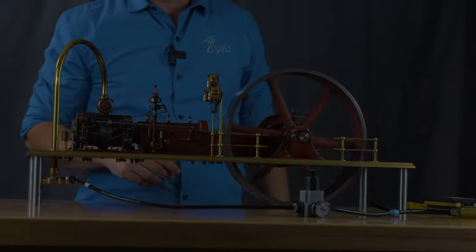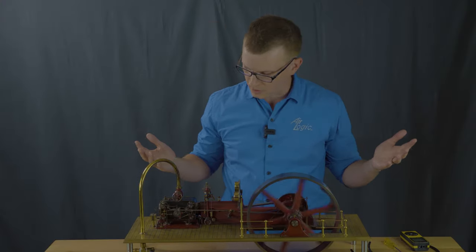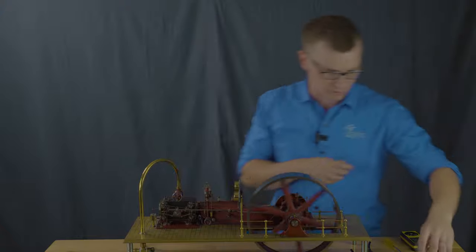Back in the day if this was a real Corliss engine, it would be running at about 100 RPM. So I'm going to say we're not quite fast enough yet, so let's bump it up one more orifice size.